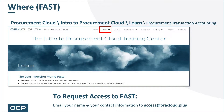Once inside FAST, you'll want to go into the Procurement Cloud Training Group and the Intro to Procurement Cloud Training Center. This video can be found under the Learn menu option. Note: if you don't have access to FAST, you can request that access by emailing your name and contact information to access@oracloud.plus.